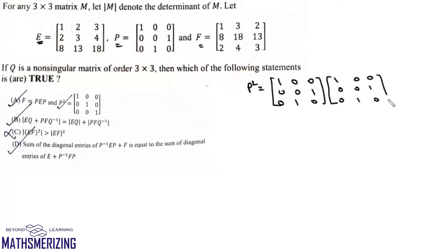Computing this multiplication: the first row gives 1, 0, 0; second row gives 0, 1, 0; third row gives 0, 0, 1. So the value of P² is I, the identity matrix.